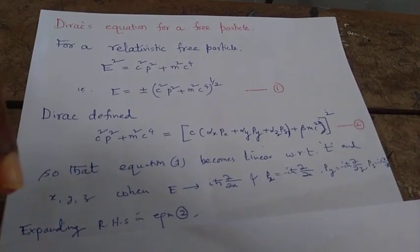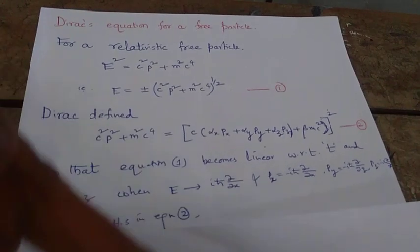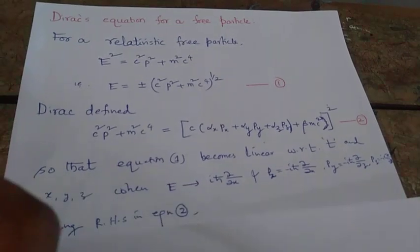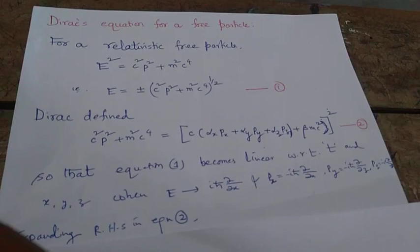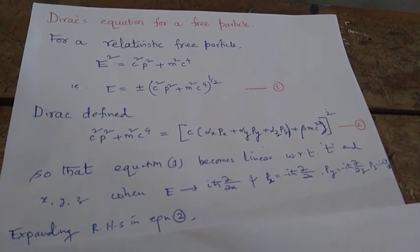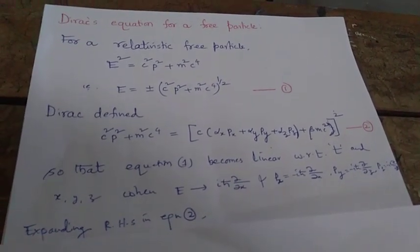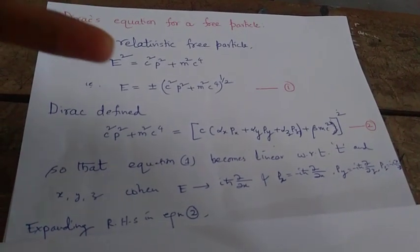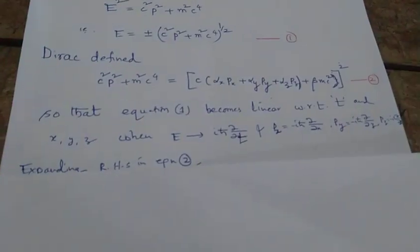The reason he took it this way is because when we replace E by its operator form, iℏ ∂/∂t, and pₓ by its operator form, -iℏ ∂/∂x, and pᵧ and pᵤ with similar expressions, equation 1 will turn into a partial differential equation that is linear both with respect to time and space.